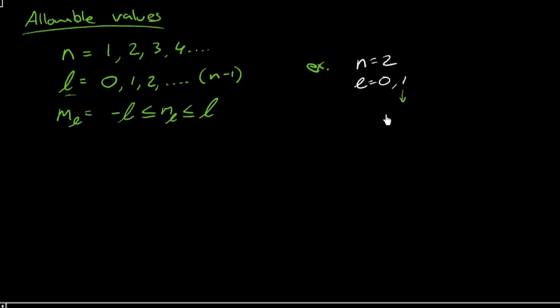Well, if we had l equals 1, for values of l equals 1, that is the angular momentum quantum number equal to 1, m sub l, the magnetic quantum number, could take on values of negative 1, 0, and 1.